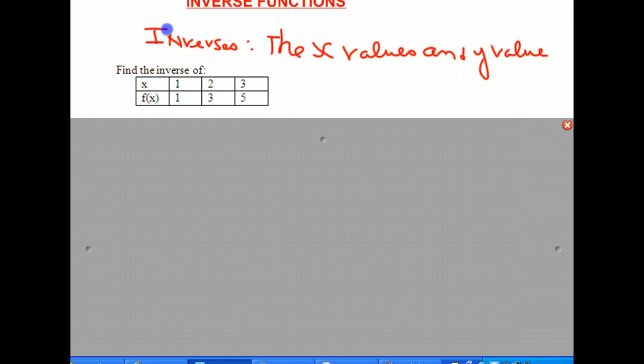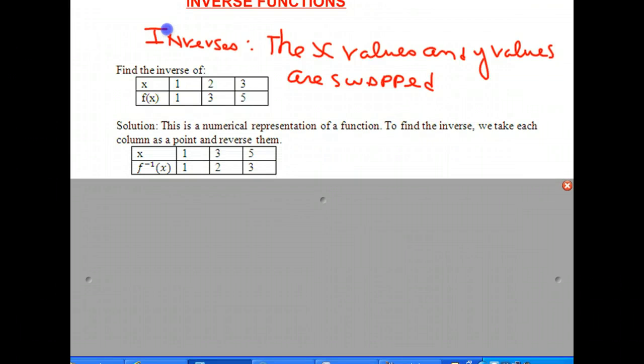Now, if you think about it, that's exactly the same as saying the domain and range are swapped, because the domain deals with all the x values and the range deals with all the y values. So let's say I said to you, find the inverse of this function. How would you do it? Well, we happen to have an answer down here, so let's just take a look. The solution is this is the numerical representation of a function. And in order to find the inverse, we simply take each column as a point and reverse them. In other words, you're going to swap the x's and y's.